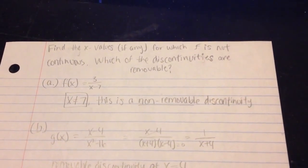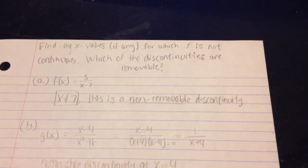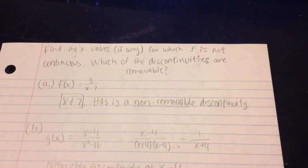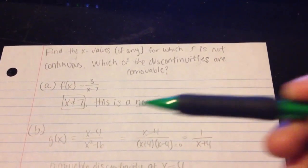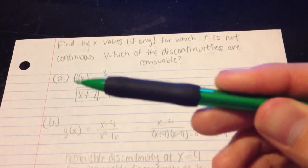Okay, so you've been asked to find the x-values, if any, for which f is not continuous. Which of the discontinuities are removable? You're given two options here, a and b.